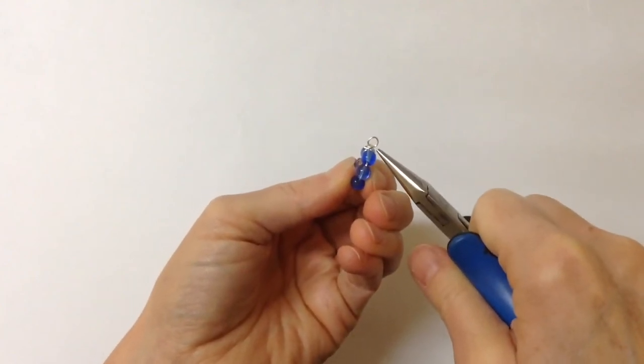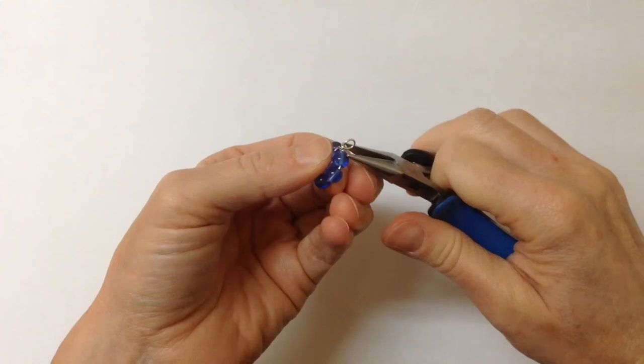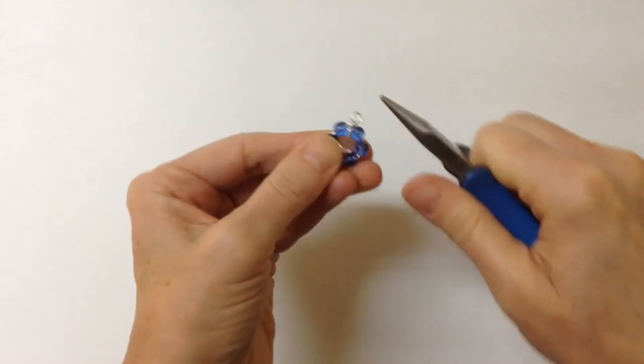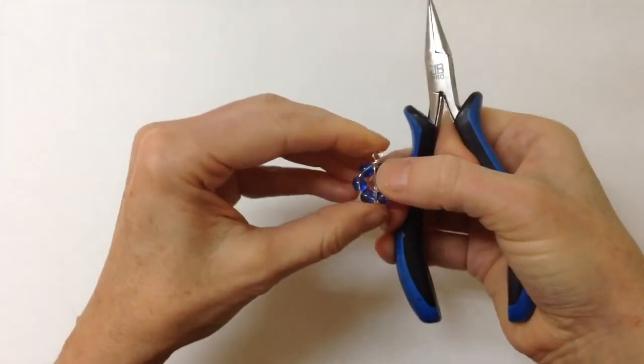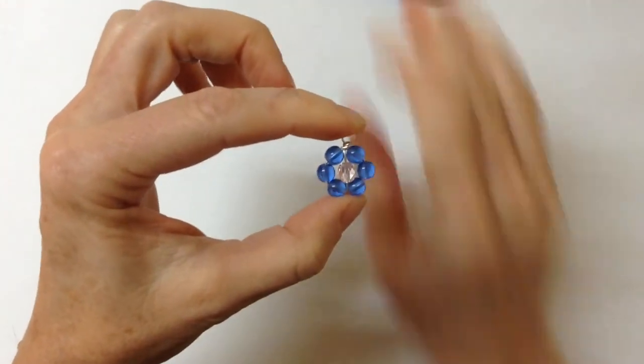If you would rather attach it with a jump ring, just turn it so it's parallel with the daisy and attach a jump ring to stick it on a necklace. And there you have your little daisy pendant.